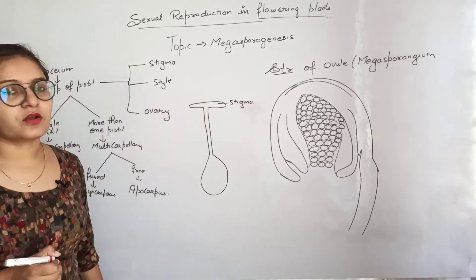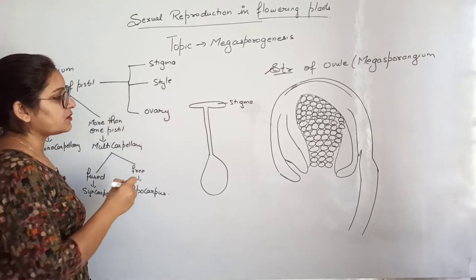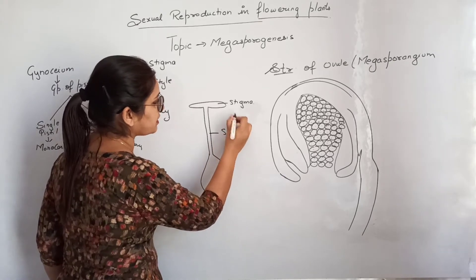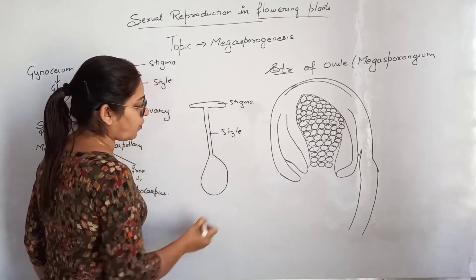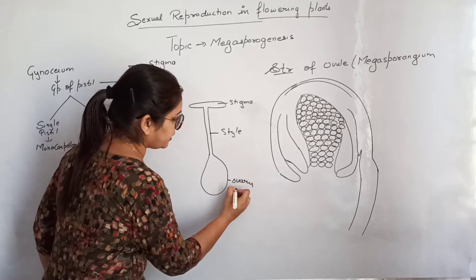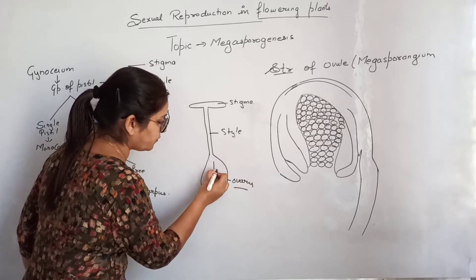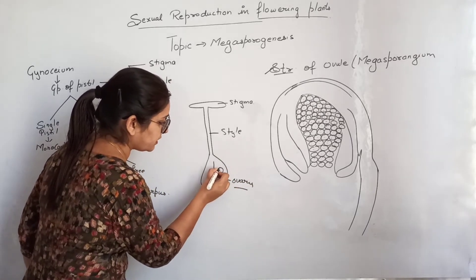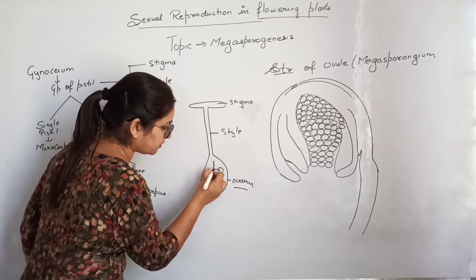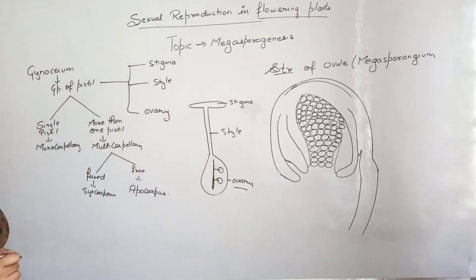After release from the anther, pollen grains stick on and land on the stigma. The style is the tubular structure that connects stigma to the ovary. The ovary contains ovules that are attached to the placenta, the connective tissue inside the ovary.